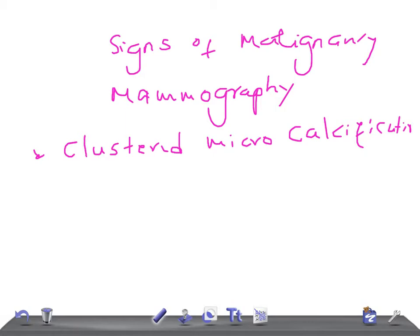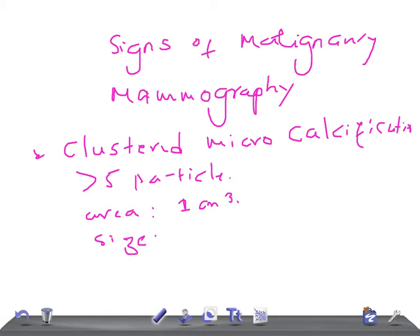So it's more than five particles in an area of one cubic centimeter. The size of this microcalcification is less than 0.5 millimeters — that's why it's known as a micro, meaning small, calcification.